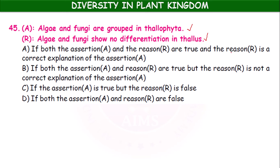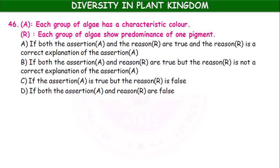Next assertion: each group of algae has a characteristic color — yes, true. Reason: each group of algae shows predominance of one pigment — absolutely correct. Both assertion and reason are true, and the reason is the correct explanation of the assertion.